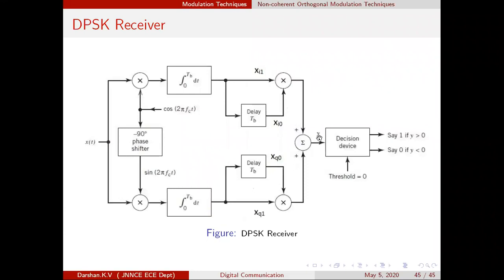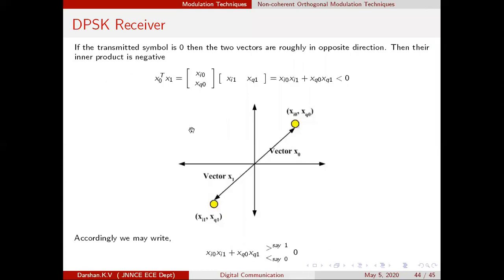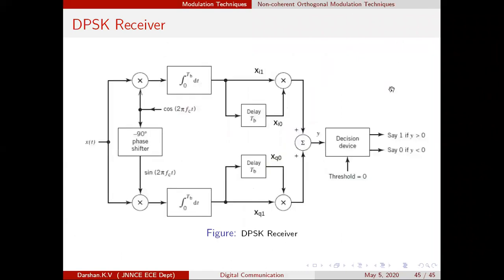The output y gives the inner product. If y is less than zero, symbol 0 has been transmitted. If the inner product y is greater than zero, symbol 1 has been transmitted. This is the complete block diagram of the DPSK receiver.